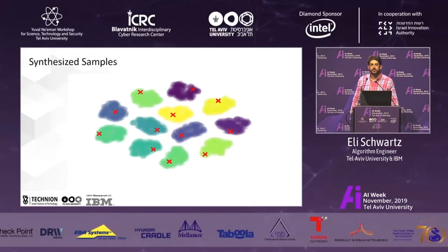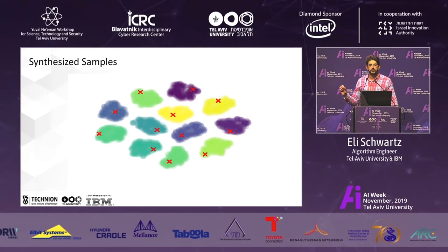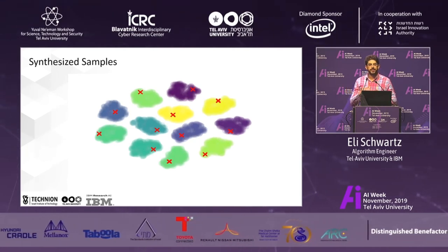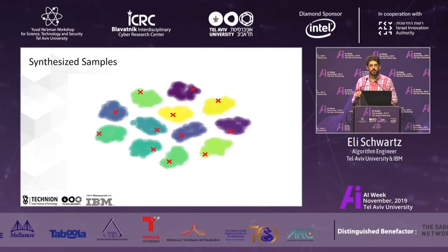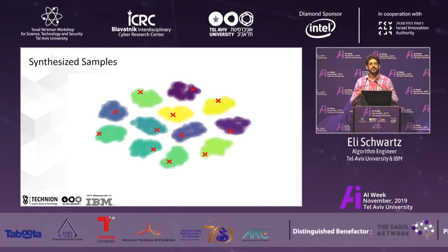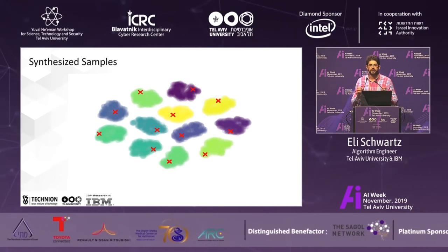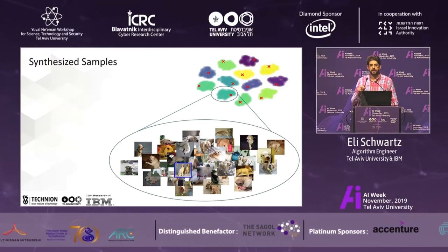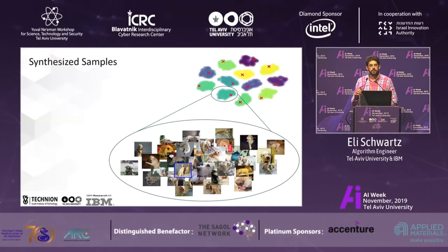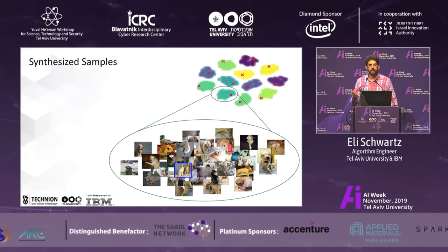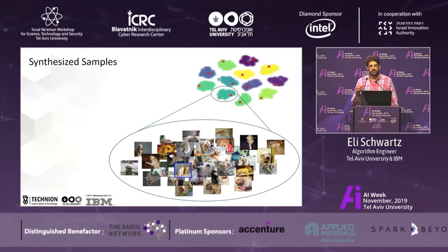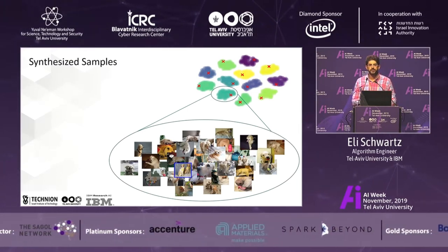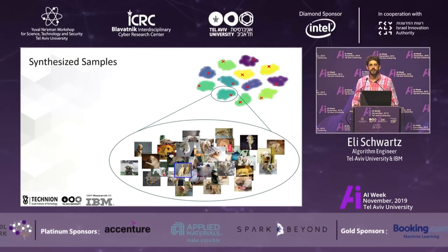We can also visualize our generated samples. The red crosses are the one-shot per category we got, and the colored clouds around them are the generated samples. We can see that they nicely divide the space, and also that they are not naive or trivial Gaussians around the anchors — so we are not just generating noise. If we zoom in on one class, in blue is the reference we got, and we visualize the generated samples by looking for nearest neighbors in a set of real images. We can see that we generate a wide range of different images, some of them even quite far from the reference we began with.